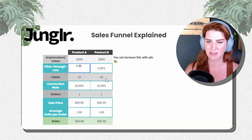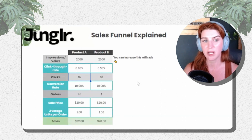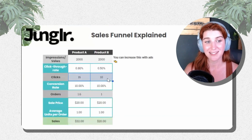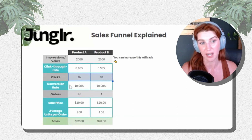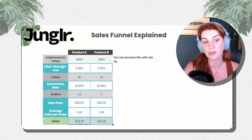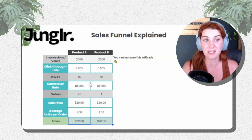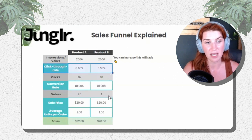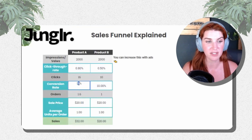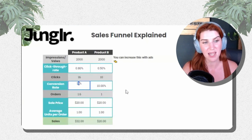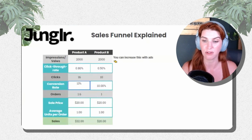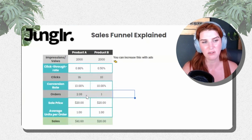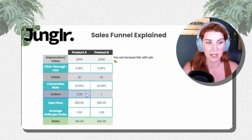Say both products are getting 2,000 views. On Product A, we optimized our main image a little bit — a very small bump — going from 0.5% to 0.8% click-through rate. That results in 6 more clicks, which is quite significant and increases sales relatively significantly. Say we also added a small coupon or discount that bumped our conversion rate a little — from 10% to 13%.